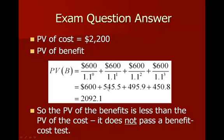And we add those up: $600, $545.5, $495.9, and $450.8 gives us a total of $2,092. So since $2,092 is less than the present value of the cost, the project does not pass the benefit cost test.